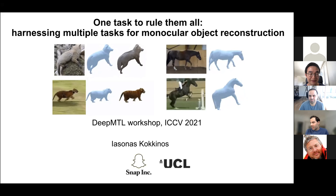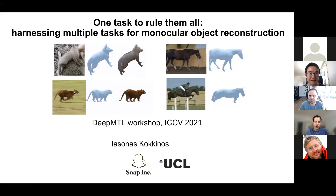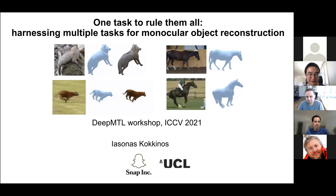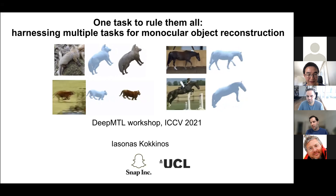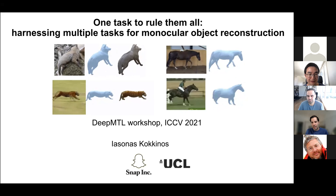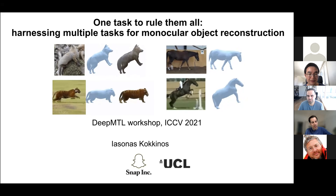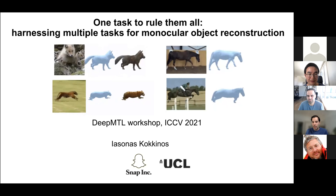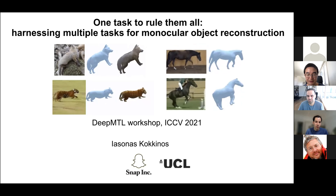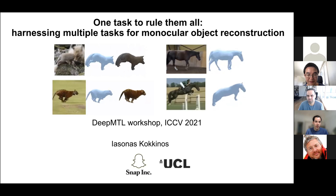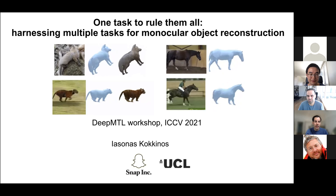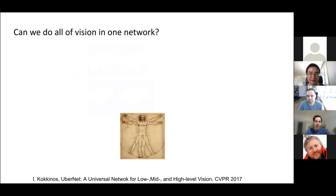My talk will be motivated also by some questions that showed up in the previous talk about why we do all those tasks and which tasks matter. It's a bit of taking a different spin on this question. I will try to make the case that maybe all we want to solve is one task that includes all existing computer vision tasks as derivatives — and the claim is that, at least for many vision tasks, this is monocular object reconstruction.